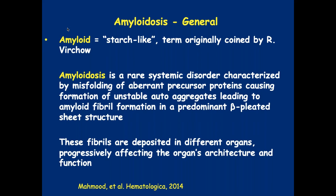Looking at the generalities, amyloidosis means 'starch-like.' This is a term coined many years ago, and it's essentially a group of different diseases. There are at least 36 different proteins that can mimic the same presentation, and around 17 of those types of proteins can actually make some systemic disease that we can see in patients presenting clinically. Light-chain amyloidosis is the most common within these conditions, and TTR is the second one.